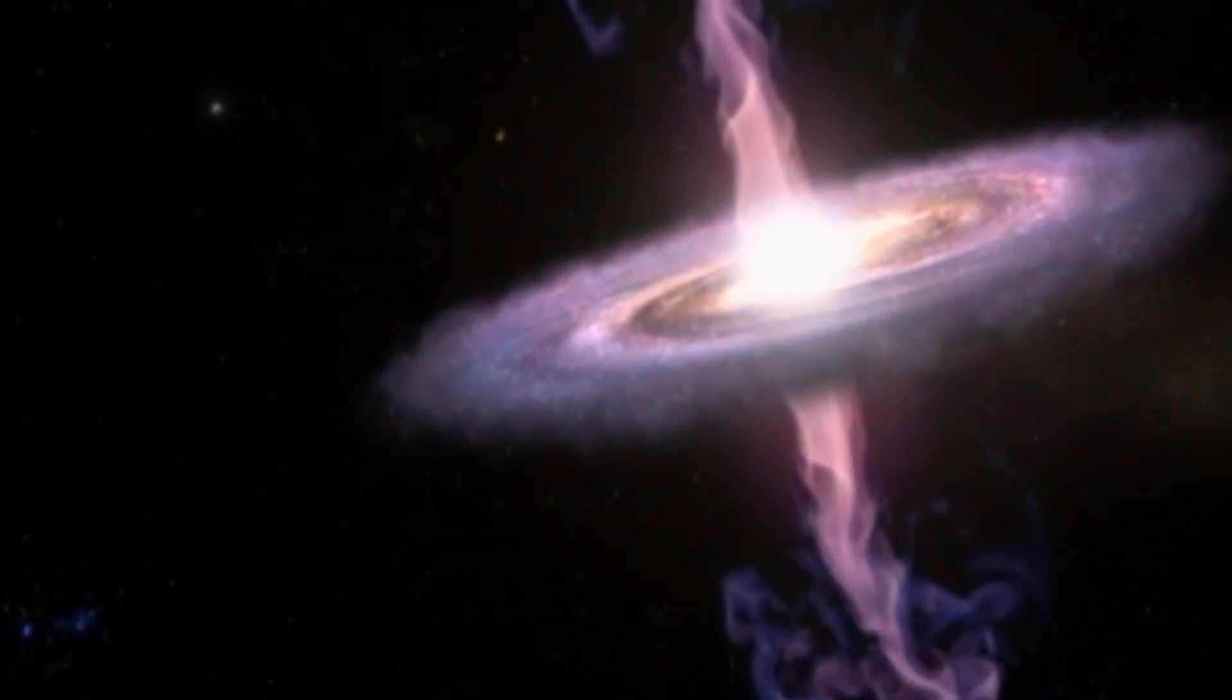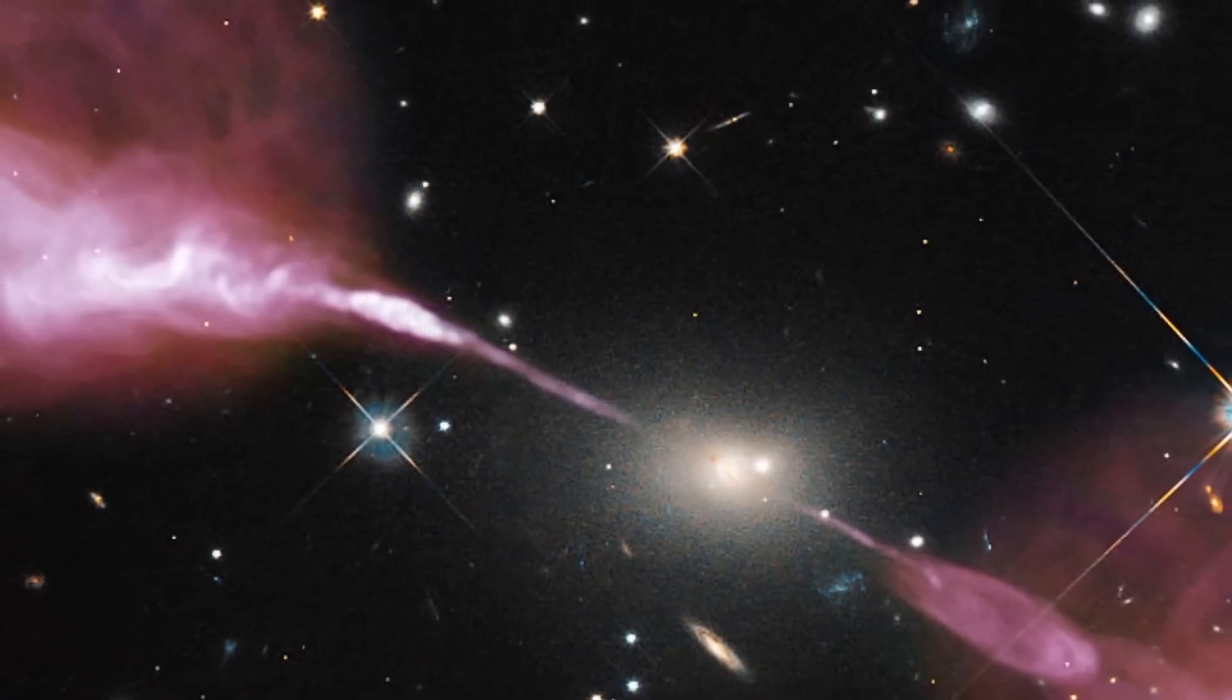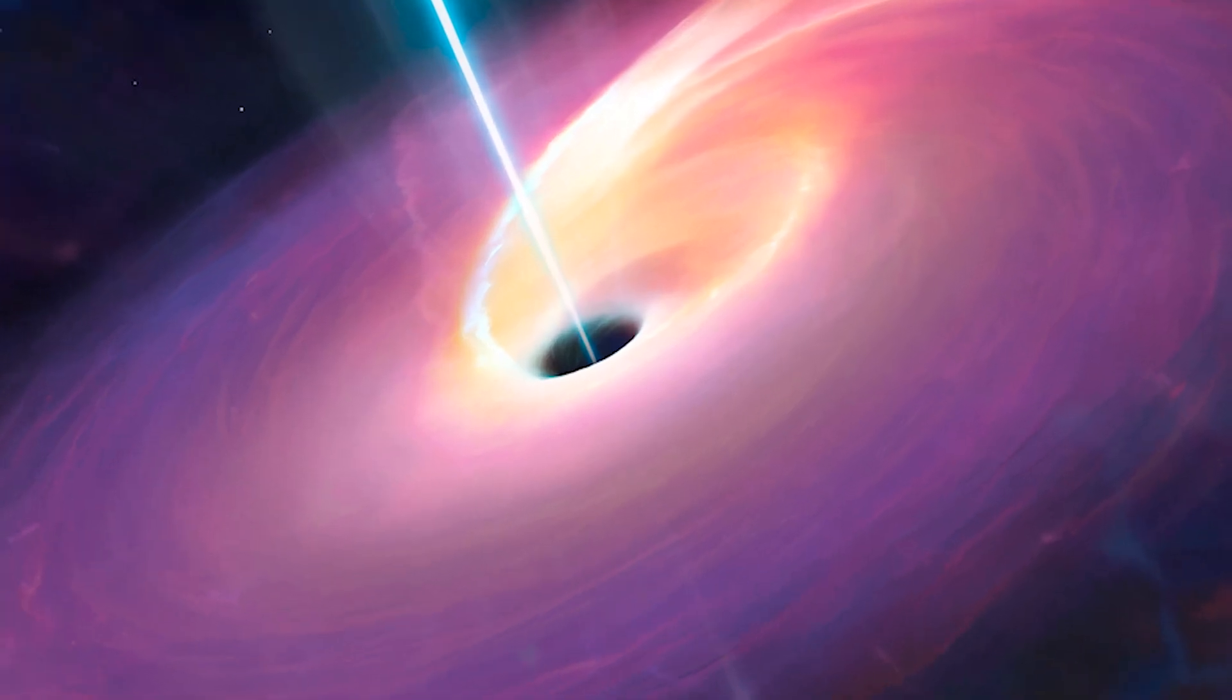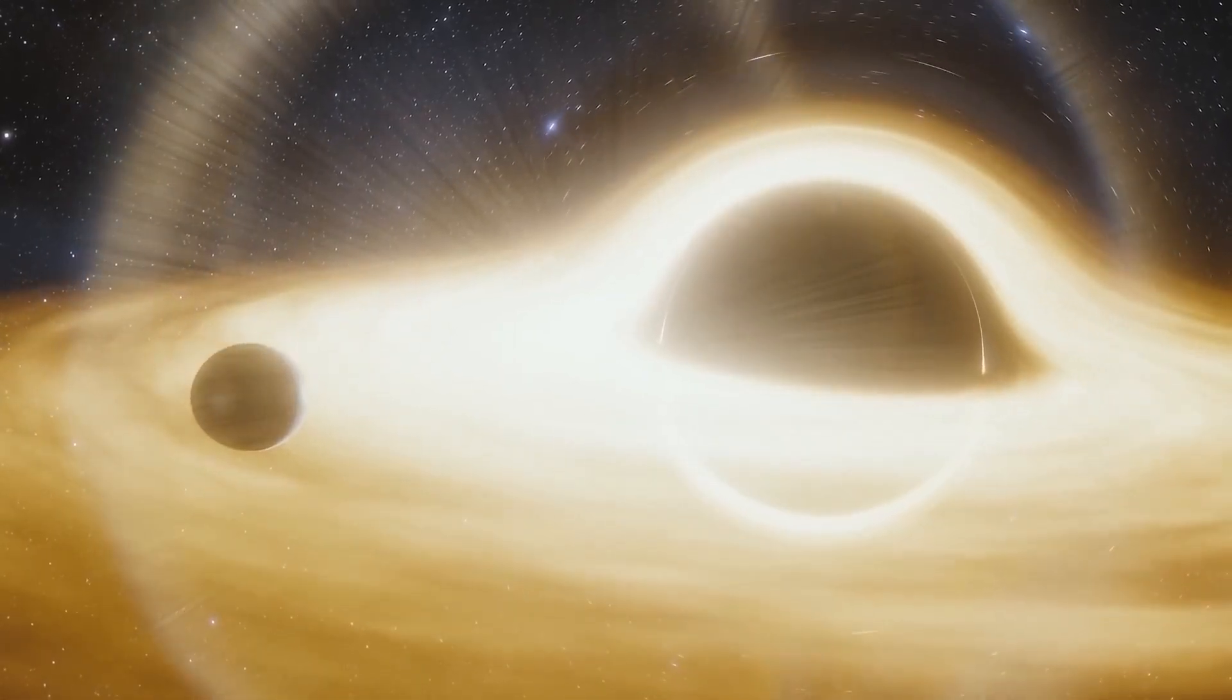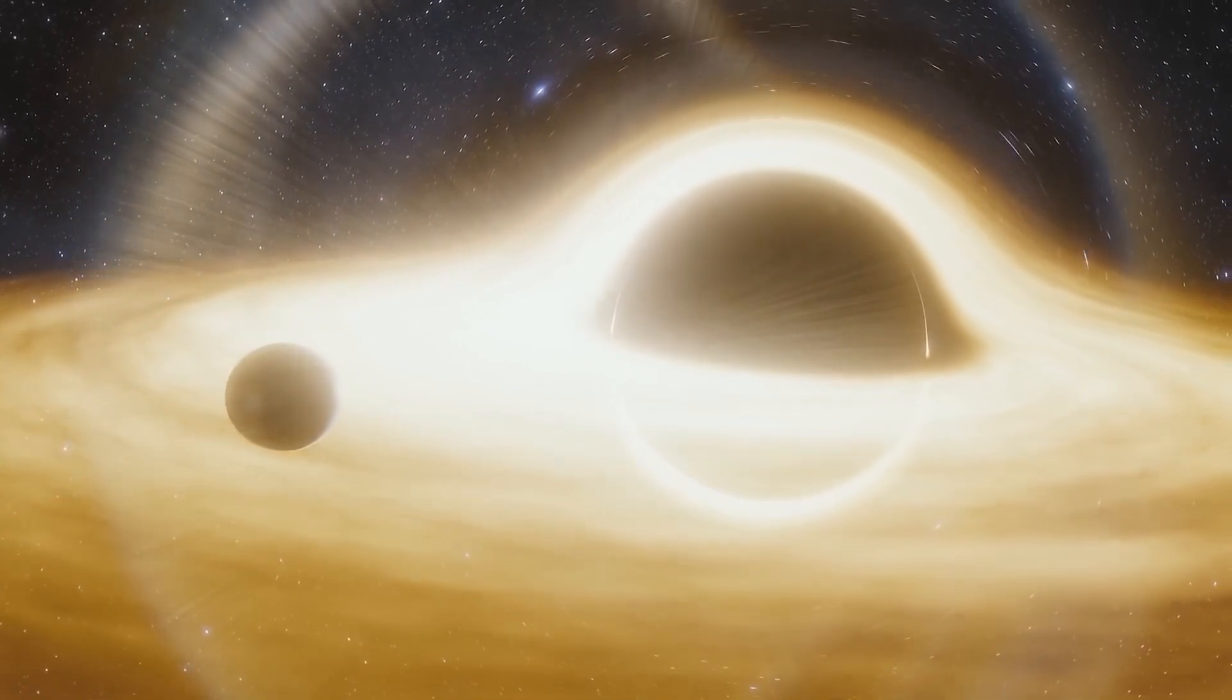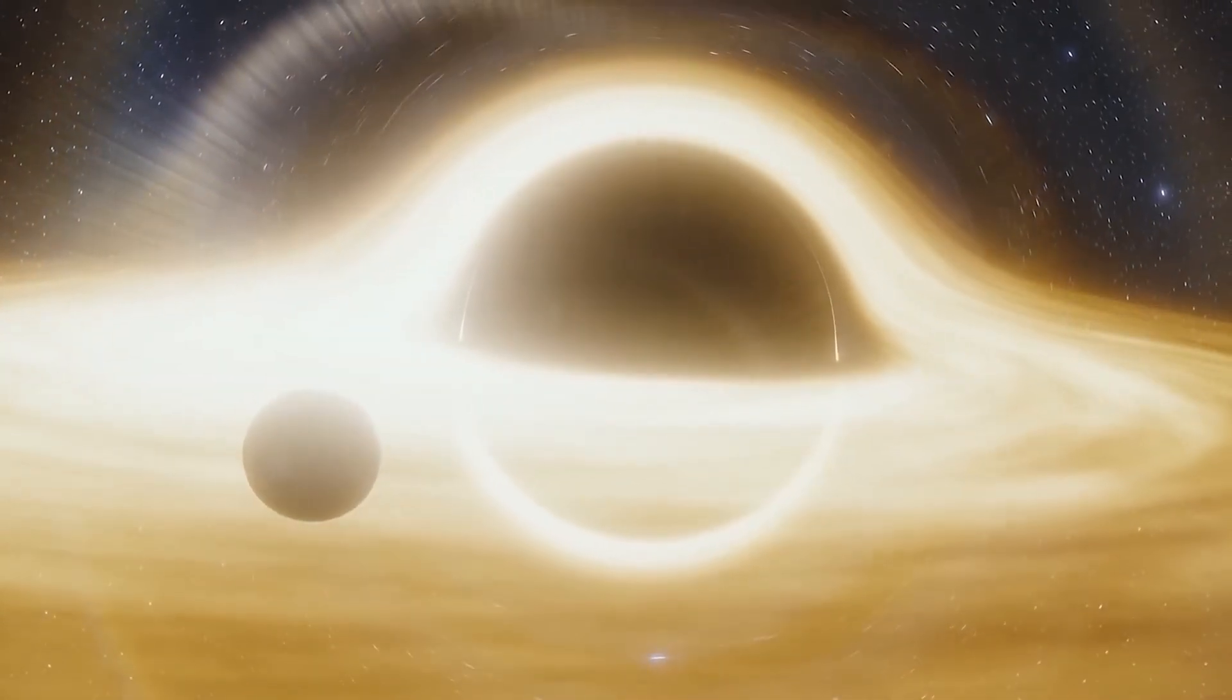Now, the AGN gets its amazing brightness from material falling into a swirling disk called an accretion disk. This disk surrounds a black hole chilling at the galaxy's core. Yes, you heard it right, a black hole. But don't worry, it's not as scary as it sounds.